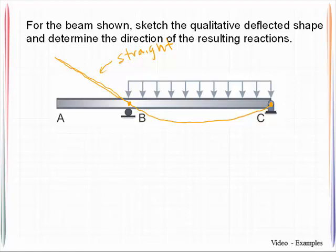So member AB doesn't have any load in it, and thus it doesn't have any moment. And you can just evaluate that in your own mind by taking a cut here, looking at that free body diagram. You've got shear, you've got moment here, as far as being possibilities.